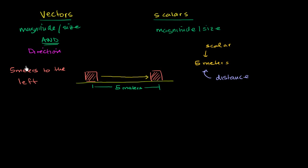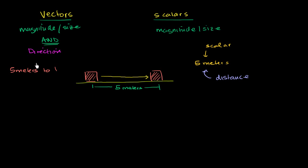Now we have specified a magnitude — and we have specified a direction, to the left. Actually, it should be five meters to the right — that's why direction matters. It started here and went five meters to the right. So the magnitude is five meters and the direction is to the right. What I've just described is a vector quantity.